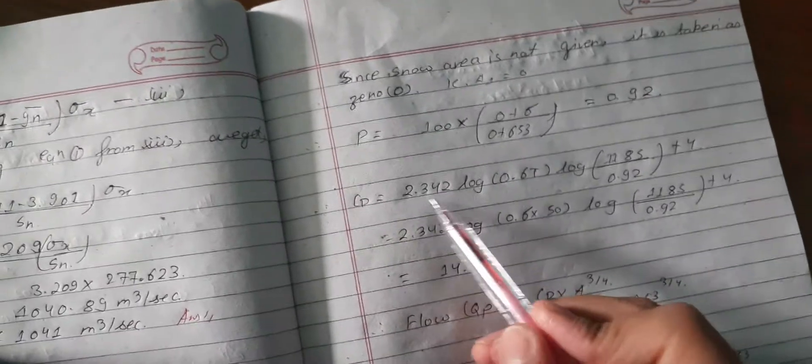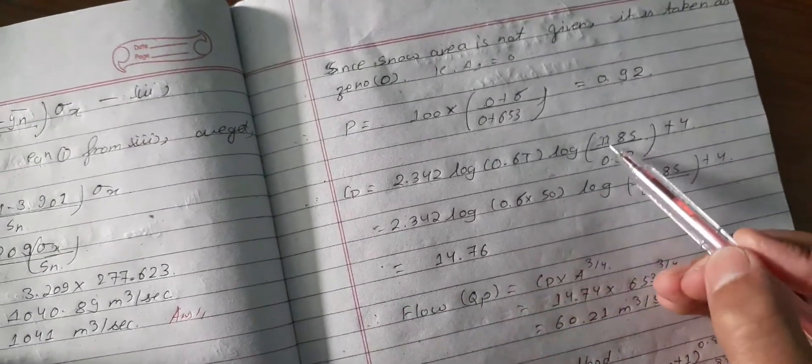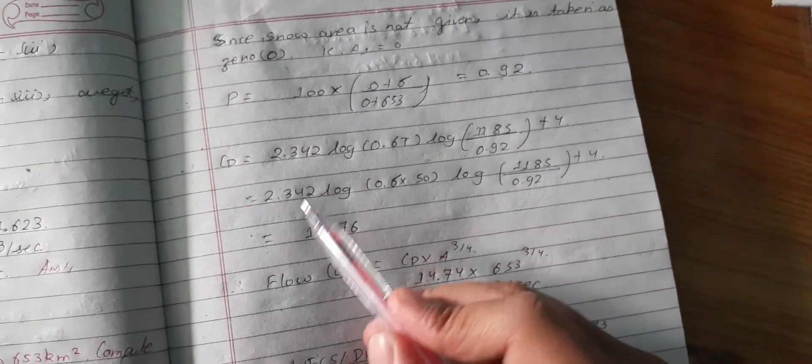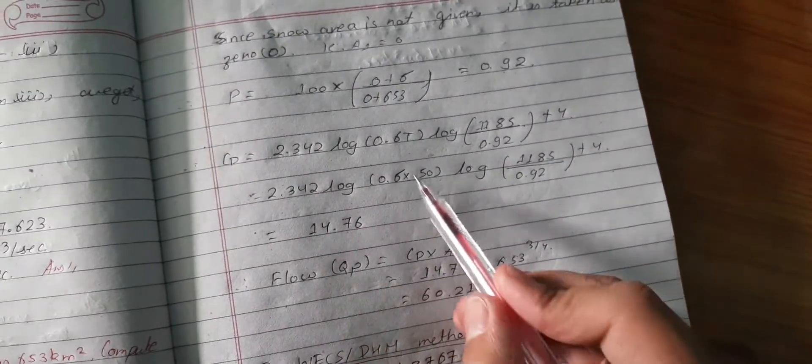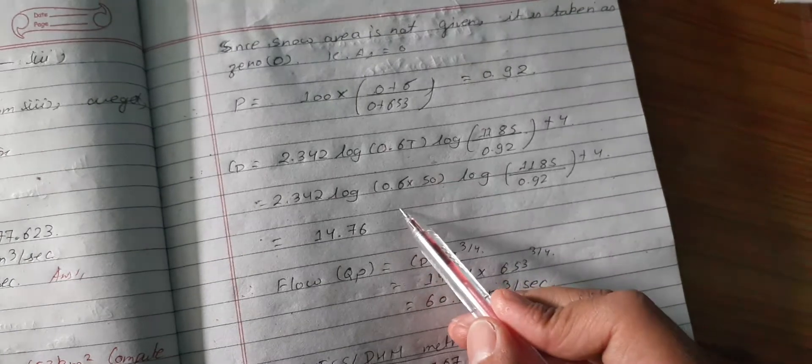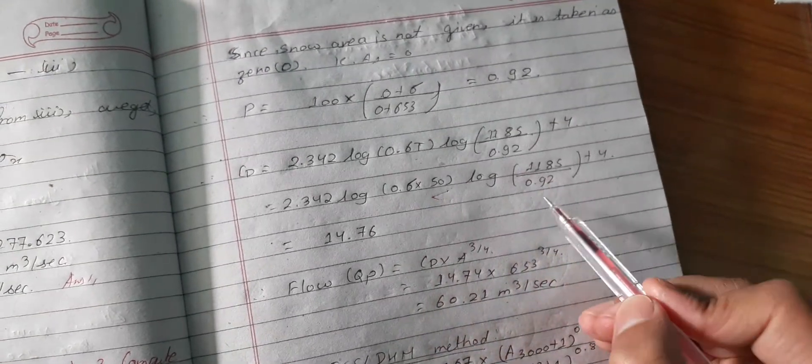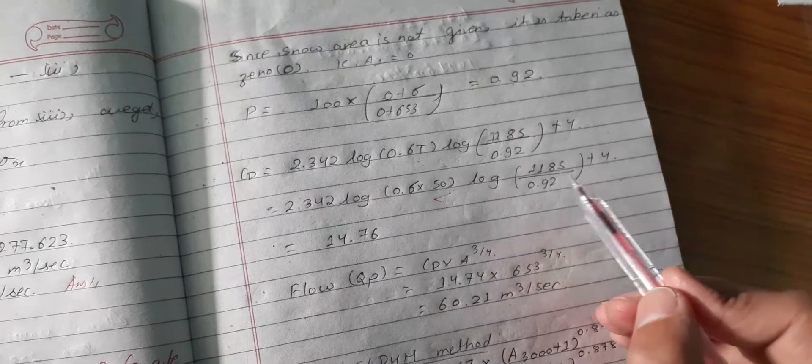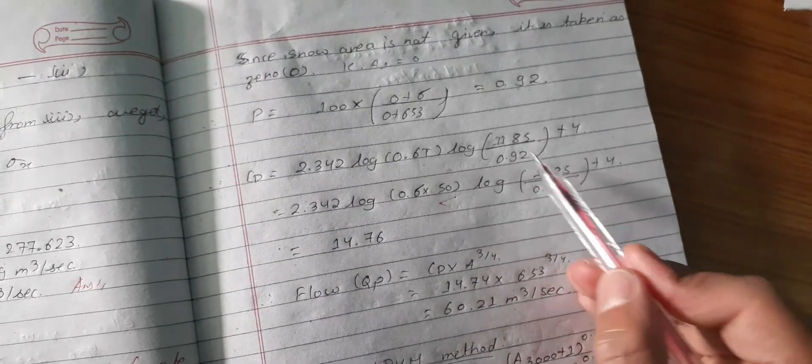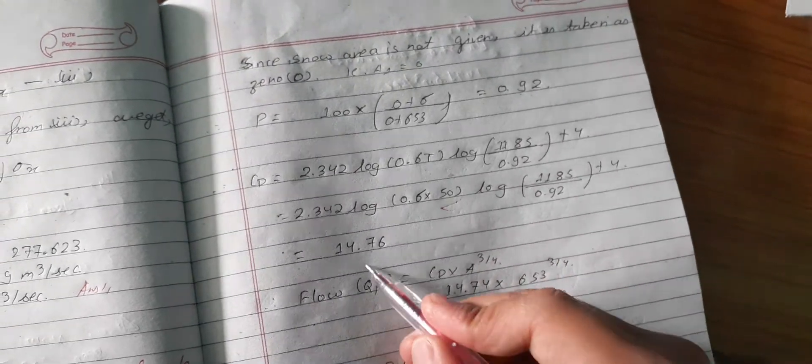Now the value of CD = 0.64 log(185/0.92) + 4. If you solve, the value of CD is calculated here on the right.